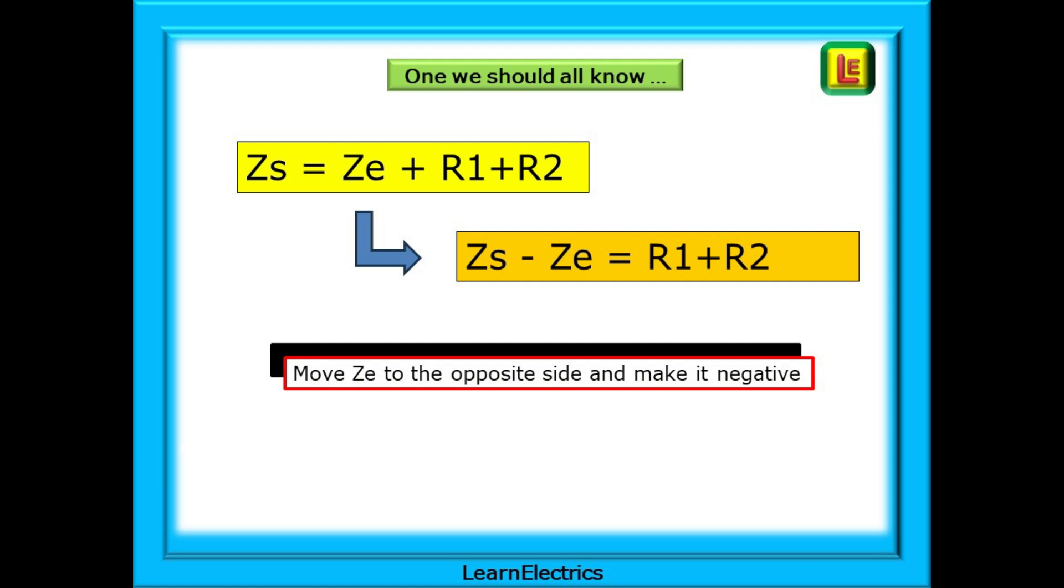And here is an addition formula that we should all know. It will appear in electrical exams so very often. ZS equals ZE plus R1 plus R2. Although ZE doesn't have a sign it is implied that this is a plus value. When ZE moves to the left hand side it changes sign and becomes minus ZE. So we have ZS minus ZE equals R1 plus R2. Essential electrical knowledge.